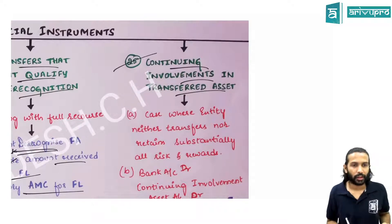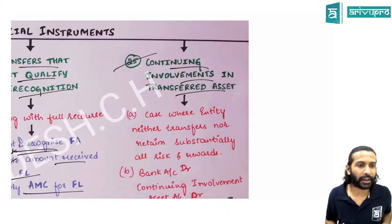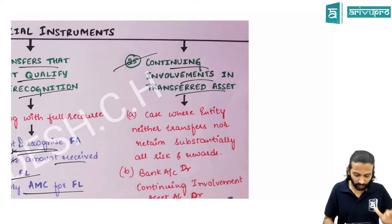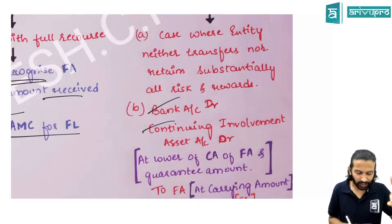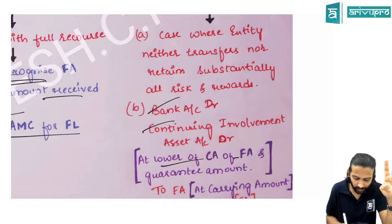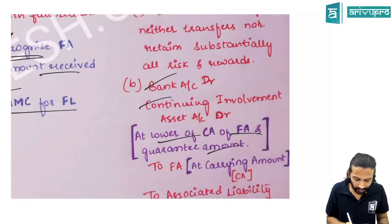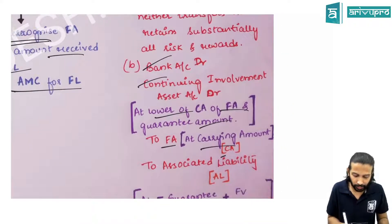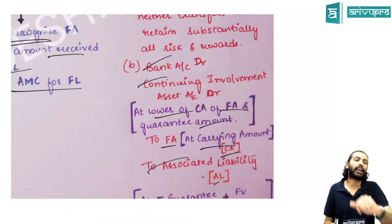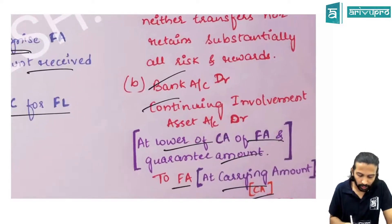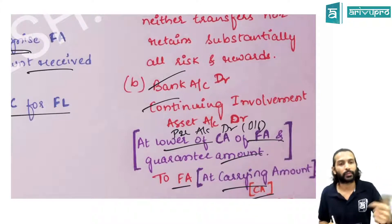Continuing involvement in an asset arises when the entity has neither fully transferred nor fully retained the asset. The journal entry is: debit bank account and debit continuing involvement in asset (recorded at the lower of carrying amount or guarantee amount). P&L is the balancing figure. The associated liability is recognized at guarantee amount plus fair value of the guarantee.